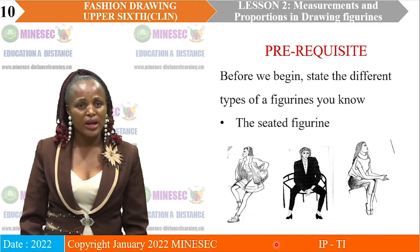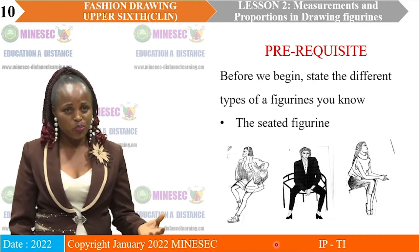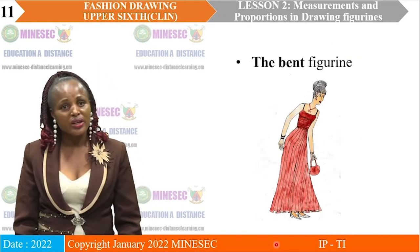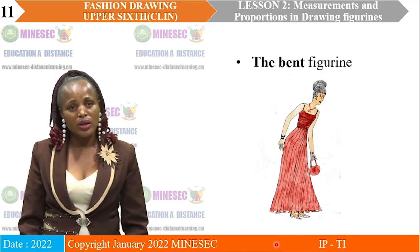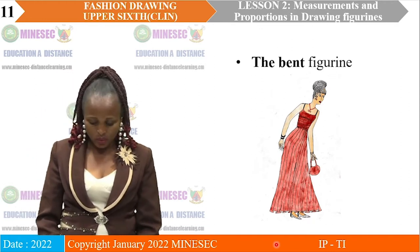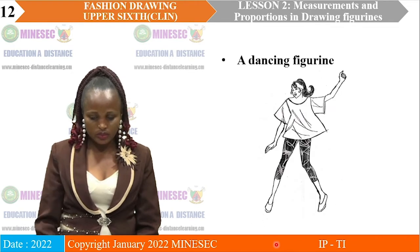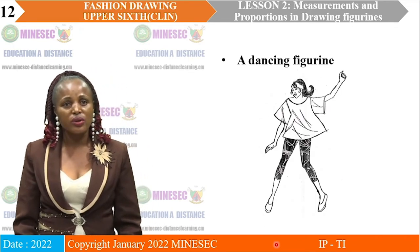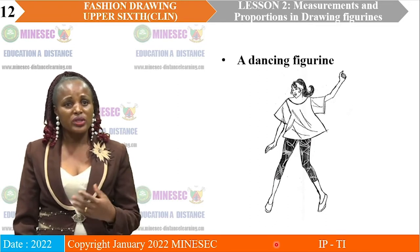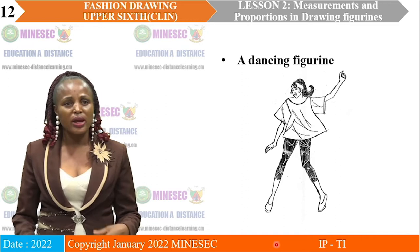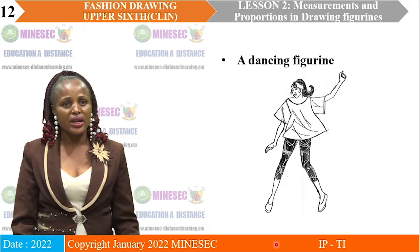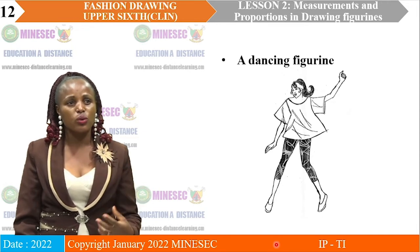Here you can see a seated figurine — those of you sitting are a seated figurine. You have a bent figurine: when you stand up and are about to pick something off the floor, you bend your body. You also have a dancing figurine. Sometimes during your KMS year in school you dance, and when you are dancing it is another posture. You can draw a figurine which is dancing.